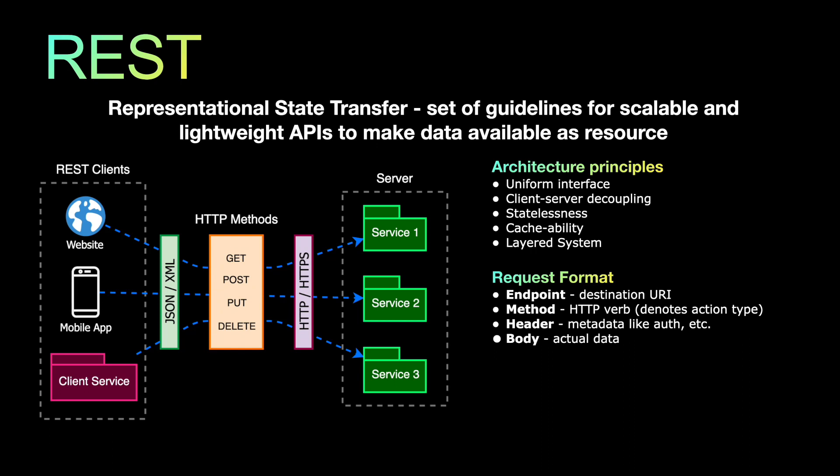REST also has a request format. Whenever you implement a REST API it will have an endpoint — the destination — which is a URI (Uniform Resource Identifier); URLs are one of the most common parts of a URI. Then there are methods — the HTTP verbs like GET, PUT, POST, and DELETE — which define the action types. When you call the API you provide the endpoint, the HTTP method, the header which is metadata around various information about the request, and the body which is the actual request content itself.